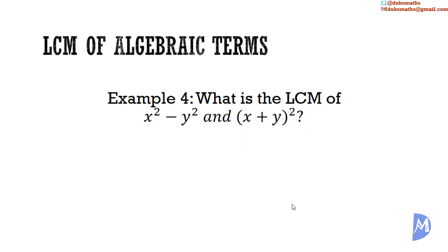For example, the LCM of x² - y² and (x + y)². We need to note that x² - y² is the difference of squares, and that is equal to (x - y)(x + y). Thus, the highest power of (x - y) is (x - y), and the highest power of (x + y) is (x + y)². So, the LCM is (x + y)²(x - y).